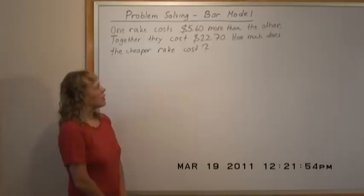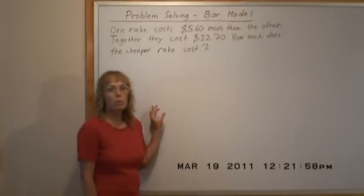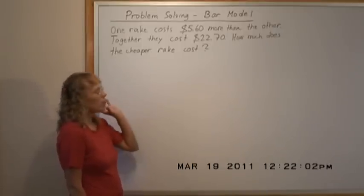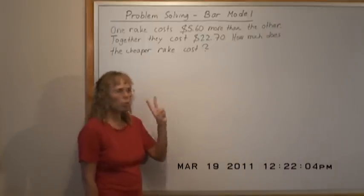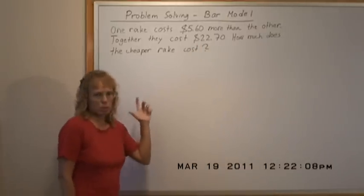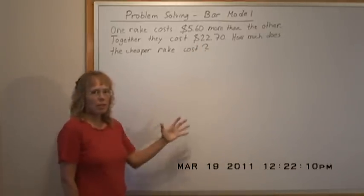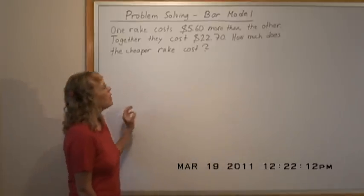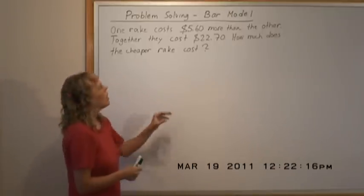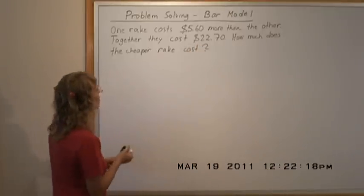Now this is a problem where we have a very specific type of bar model to help solve it. It works for the situation where you have two things, you're given the total, and one thing is so much more than the other, whether it's in money or length or weight. You're given how much more the one is than the other and you're given the total. This is the model we draw.